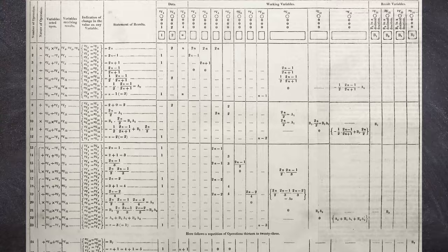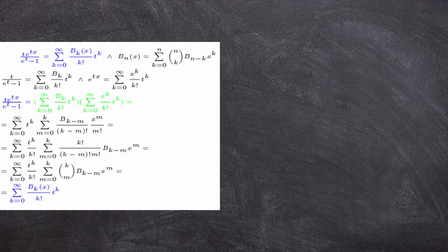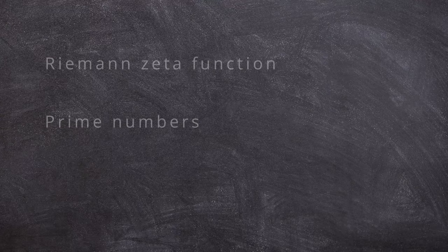Another notable work from Ada is the algorithm she wrote for the analytical engine to calculate Bernoulli numbers. Bernoulli numbers involve this equation and a few figures shown here. From what I understand, they are both related to the Riemann zeta function and prime numbers, both of which are well beyond my understanding, so I won't elaborate further. I've included some of the papers in the video description for anyone interested.